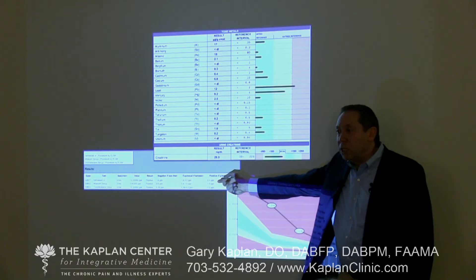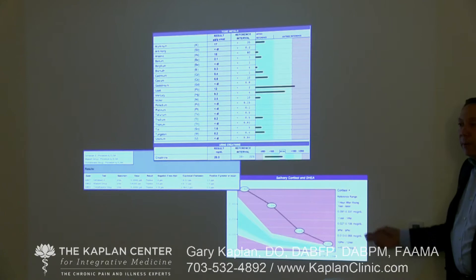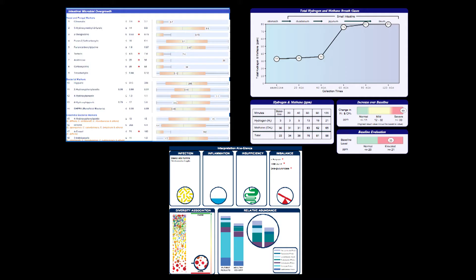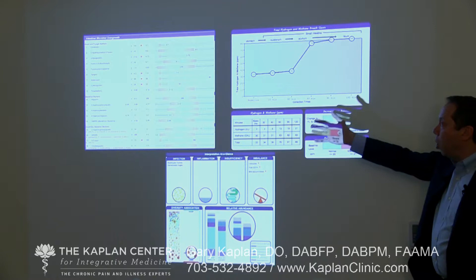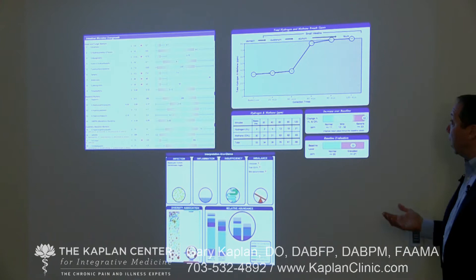We may do heavy metal testing, mold toxicity testing, the adrenal stress index which looks at the functioning of the adrenal-hypothalamic-pituitary axis, and organic acid testing — a metabolomics test that allows us to look for overgrowth of bacteria and yeast in the gut, as well as metabolic functioning for a large number of other processes going on in the body.